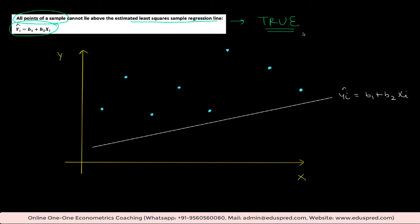Let's understand why this statement is true and why we cannot have this scenario. The regression line gives you the fitted values. For this particular x value, this is the fitted value — let's call it y1-hat. And this blue point is the actual data point — let's call it y1. Similarly, for the second value of x, the fitted value is y2-hat, and the actual data point is y2.